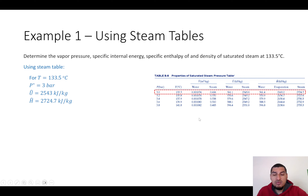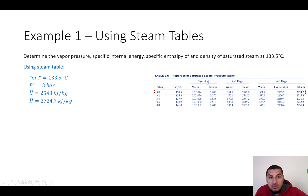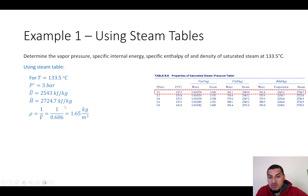To find the density, we take the reciprocal of the specific volume. This gives us the density in kilograms per meter cubed.